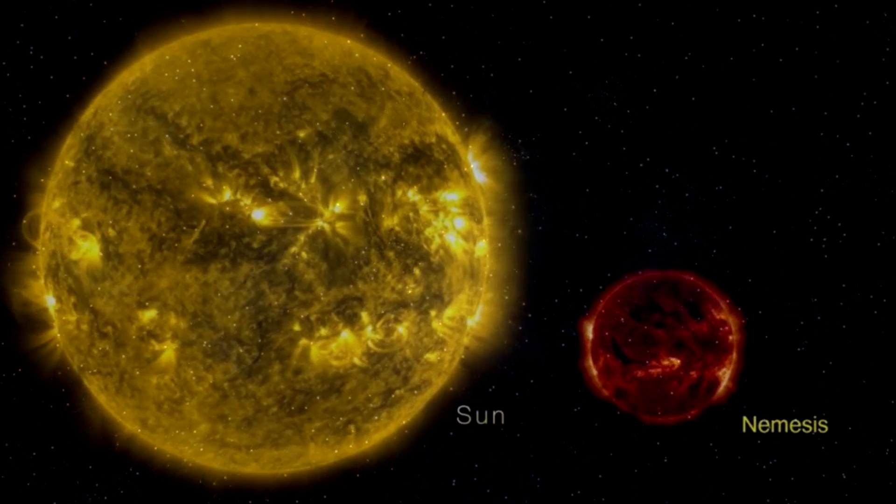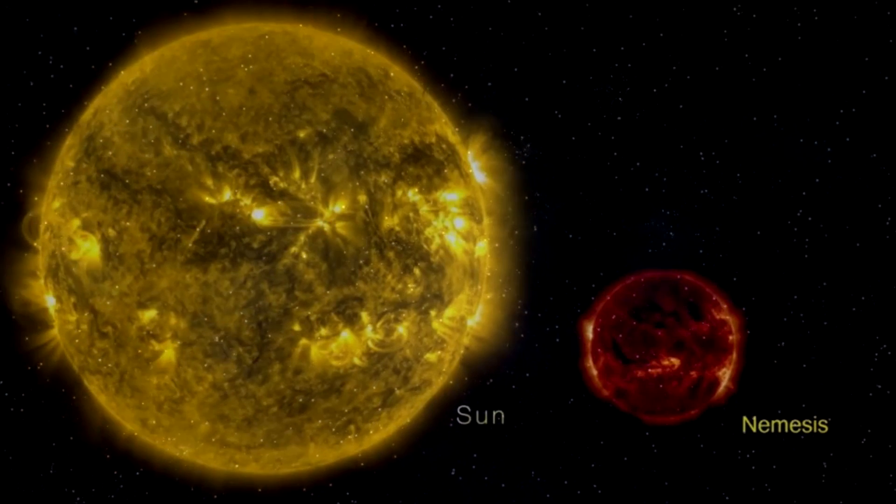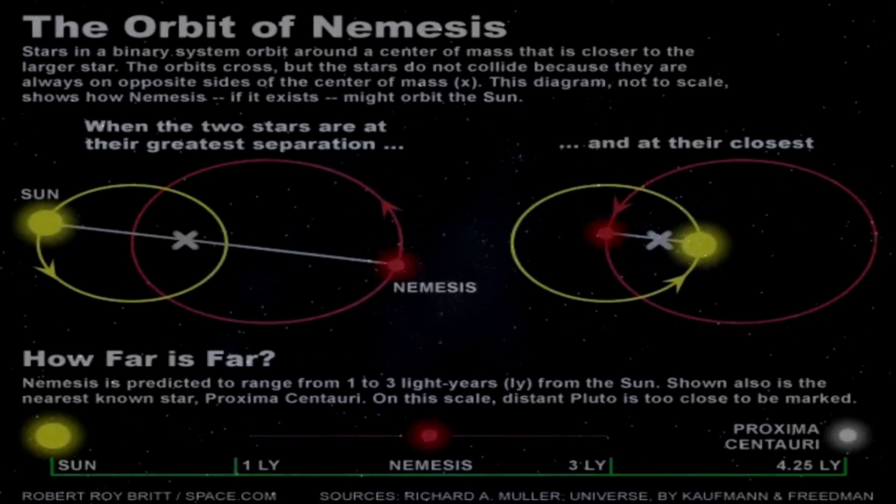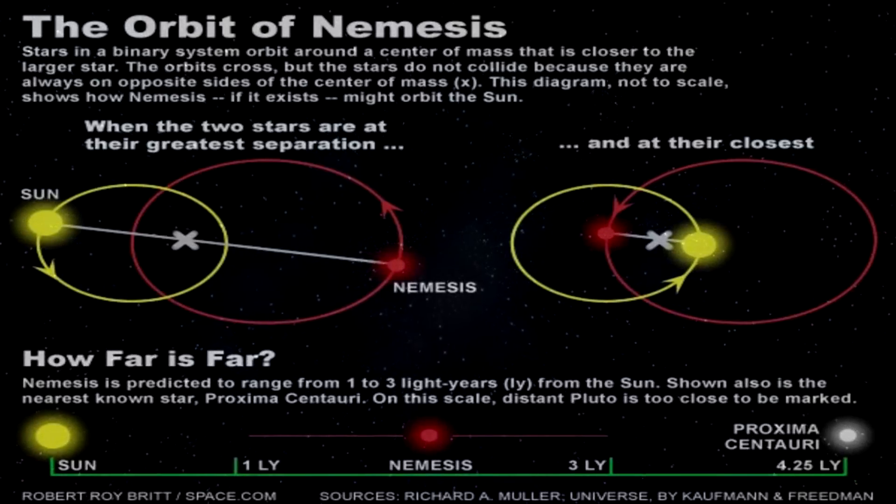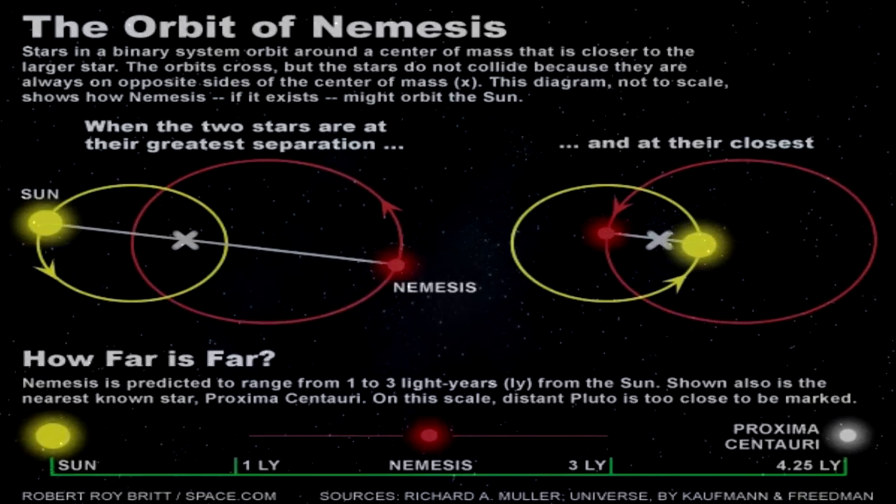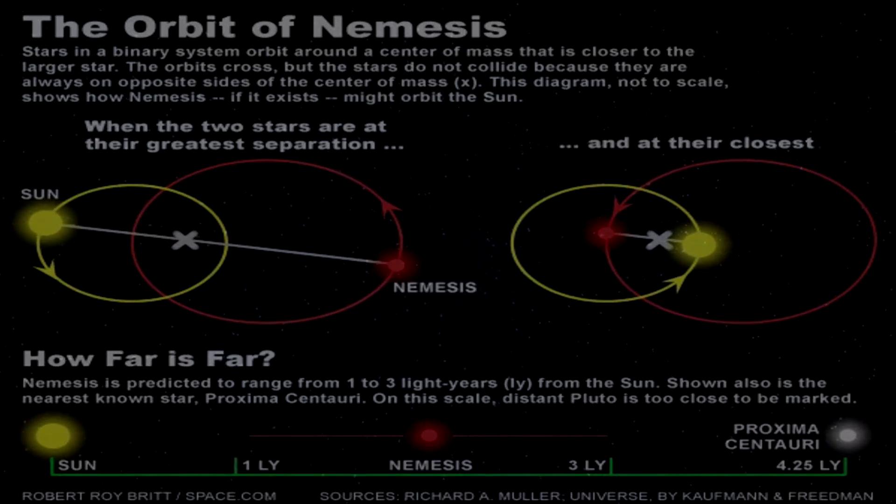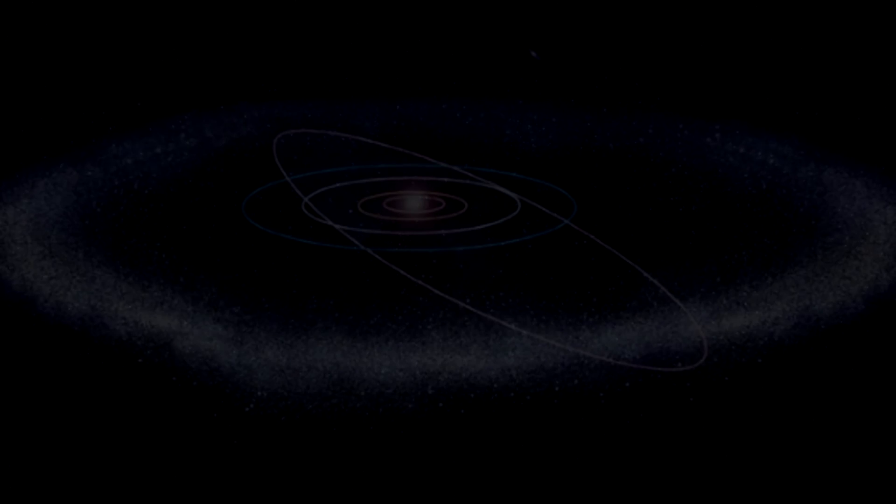In binary stellar systems, the star with the lowest mass orbits the other, which tends to be more static the more massive it is. A red or brown dwarf star, which has so little fuel in its core that it emits so little light, could have an enormous orbit, which would make sense of the postulate.